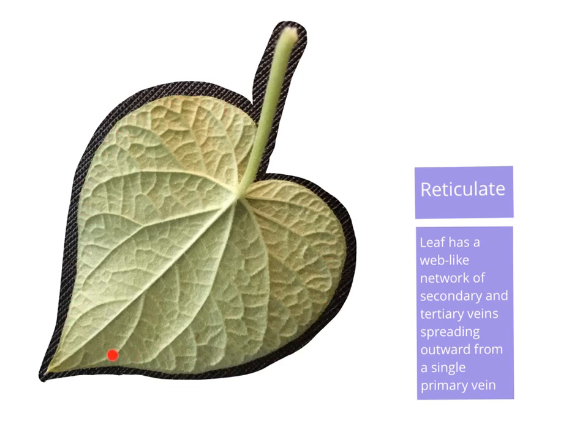When you have a network of veins, it allows the leaf to take a wider shape. So leaves that are reticulate tend to be designed to be smaller and wider — although you can find big ones — and they spread outward, side to side.